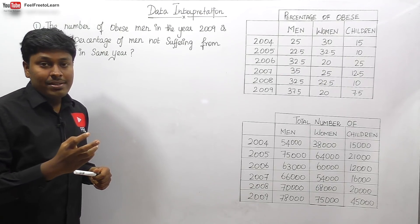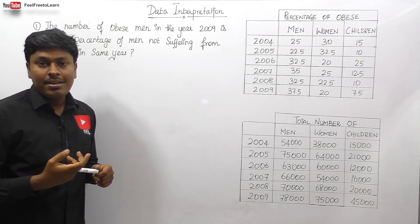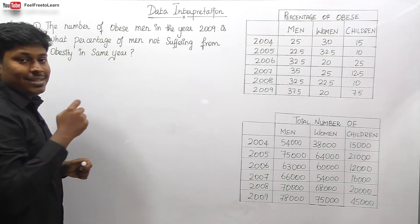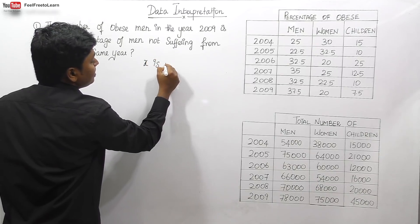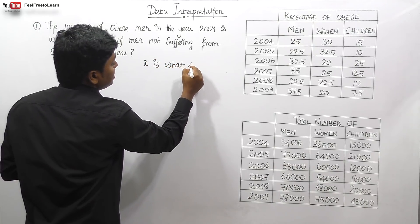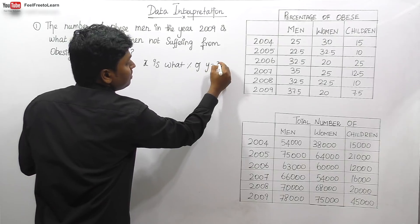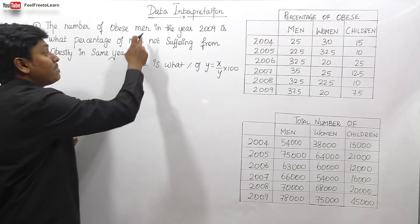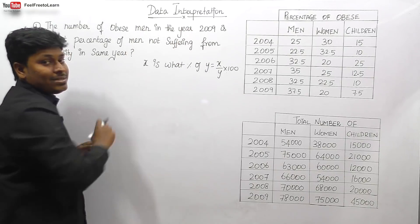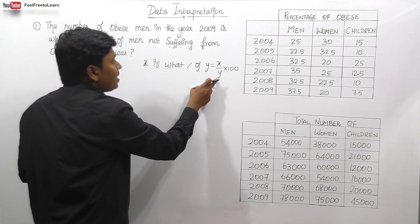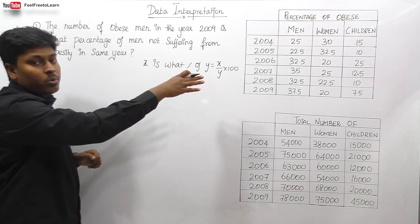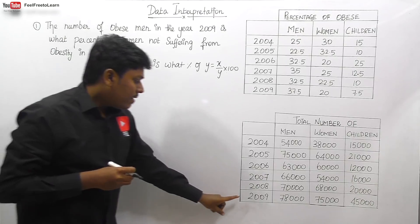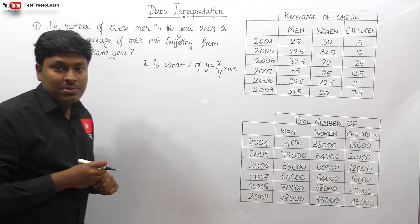Always remember: if you find 'is what percentage' in the question, the format will definitely be x is what percentage of y, and the result will be x divided by y into 100. So the numerator x is men suffering from obesity in 2009, and the denominator y is men not suffering from obesity in the same year, 2009.